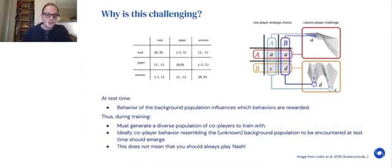Why is this challenging? The behavior of the background population influences which behaviors are rewarded in the focal population. That means you don't know what you're going to be faced with at test time. You have to somehow during training generate a diverse enough population of co-players to train with. Think of your self-play population-play algorithm needing to generate players that are implementing all of the different strategies that are possible in the world so that individuals in your population will have seen them and trained against them and know how to act alongside them.